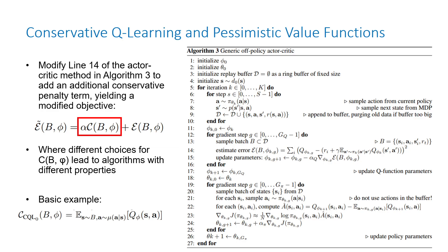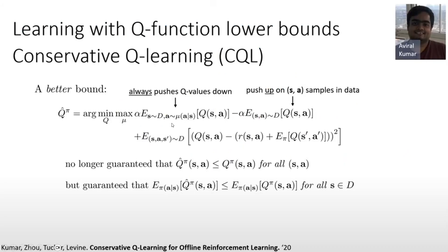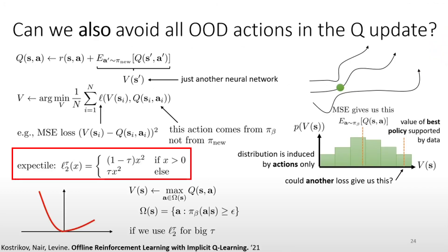Looking closely at the CQL function: from the 2020 paper, you have the standard Q function learning term plus an extra term that pushes down Q values far from your dataset and pushes up those that are close. You want to stay close to the distribution but also precisely train the Q function to achieve optimal behavior.